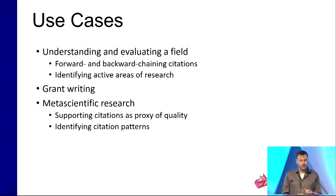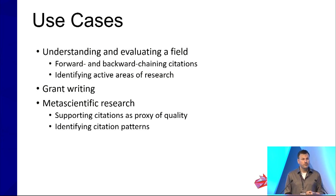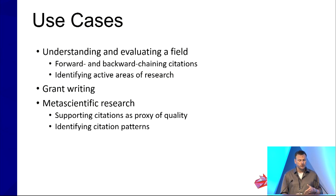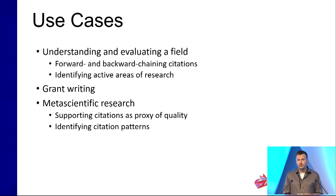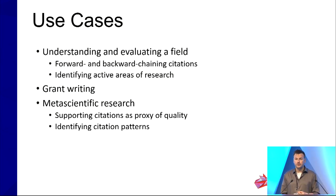There are also applications for metascientific research. We're very happy to collaborate with metascientists and provide data, usually for free. You can use supporting citations as a proxy for quality — not a perfect proxy, but some indication of the quality of scientific research. In fact, I have a graduate student, Hillary Copeland, who just finished analyses doing exactly this: looking at racial, ethnic, and gender diversity of authors and its impact on quality of scientific output, using supporting citation count as one outcome variable.